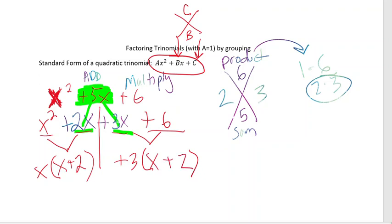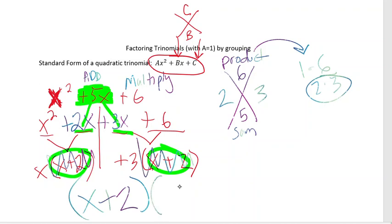Now I'm ready to write my final answer. The ones in parentheses, the x plus 2, that's one of my factors. So I'm going to factor that out because that's what they have in common. When I factor that out, what's left is the other factor, which is x plus 3. So my final answer in factored form is x plus 2 times x plus 3.